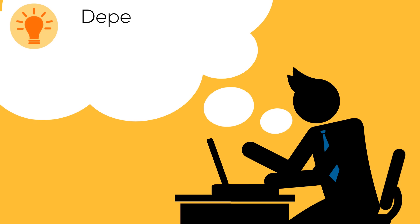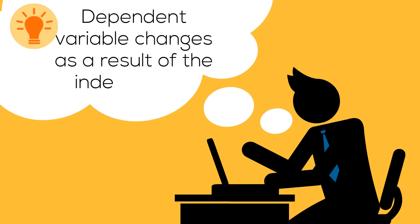The dependent variable is the part of the experiment that changes in response to the independent variable. The dependent variable is always graphed on the y-axis.